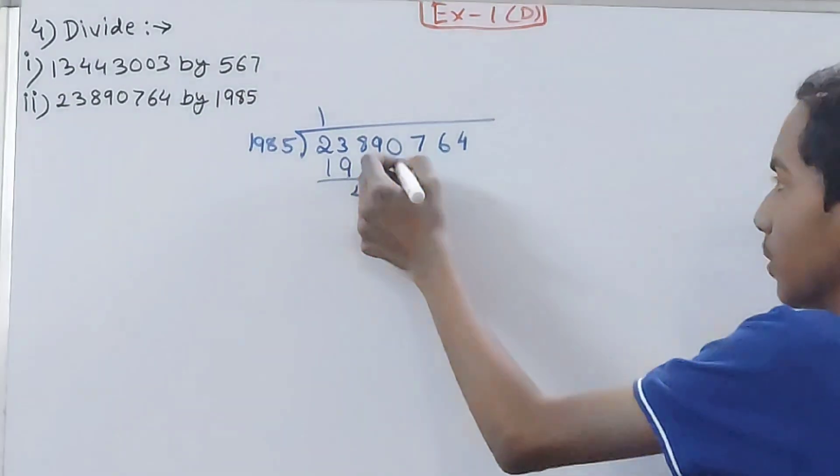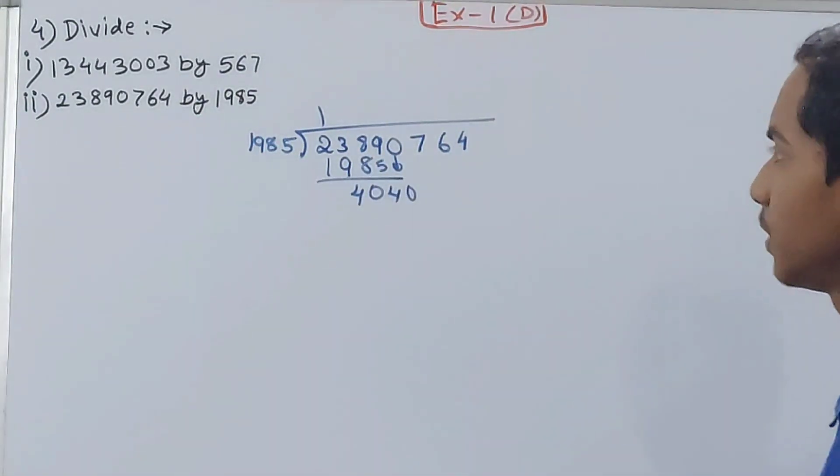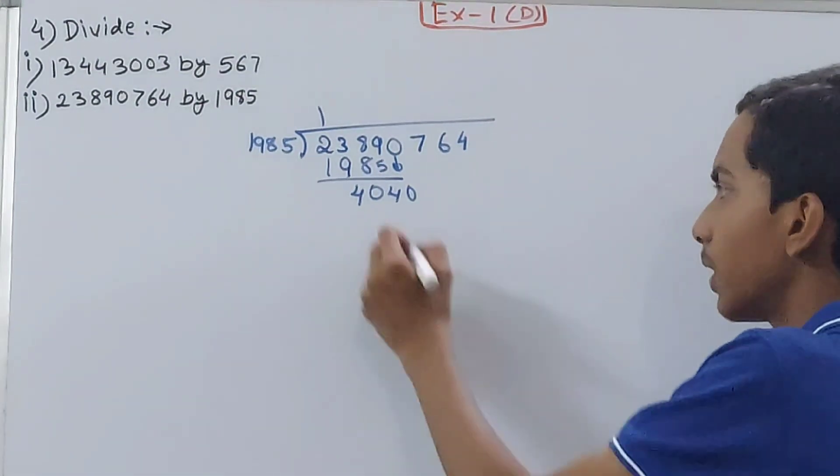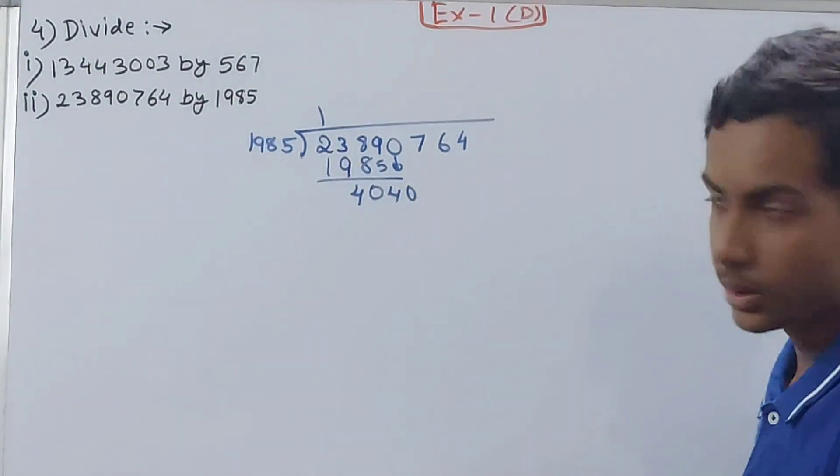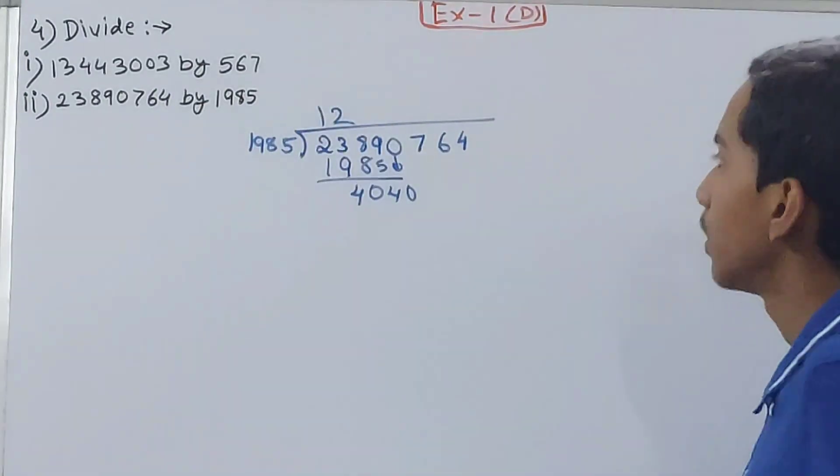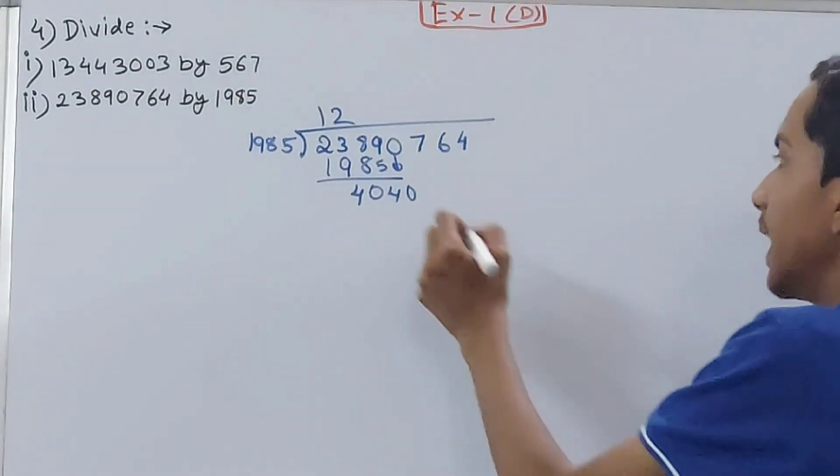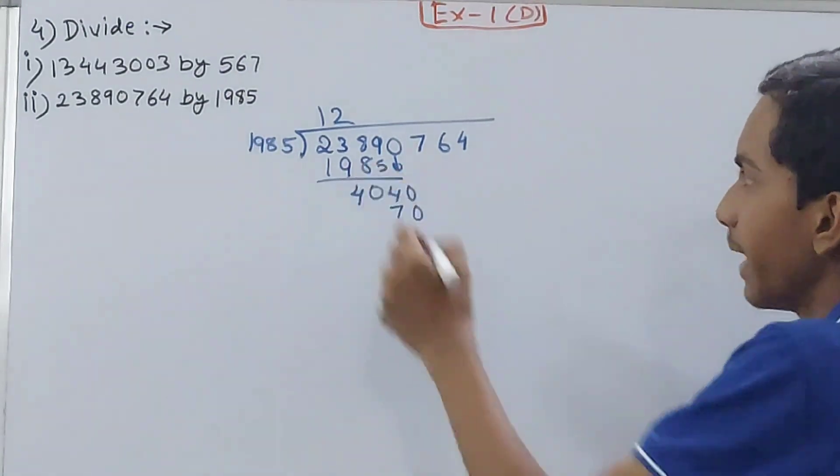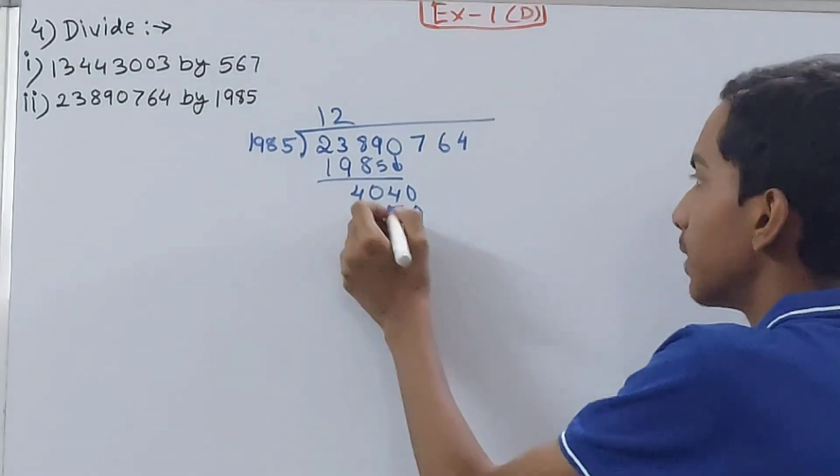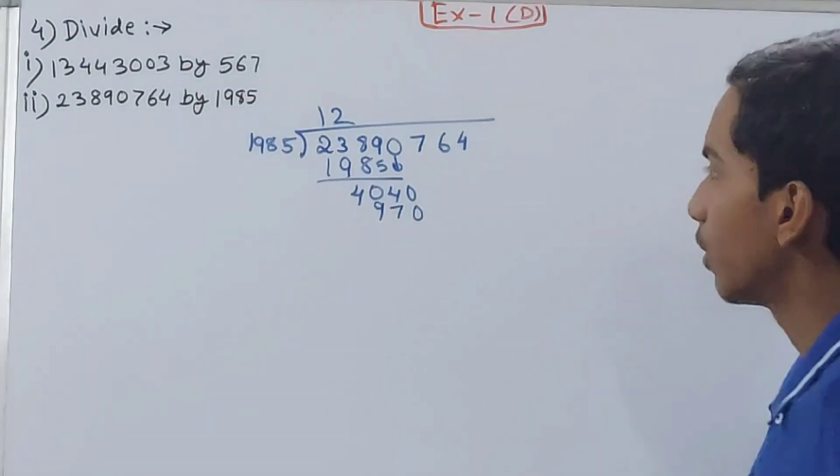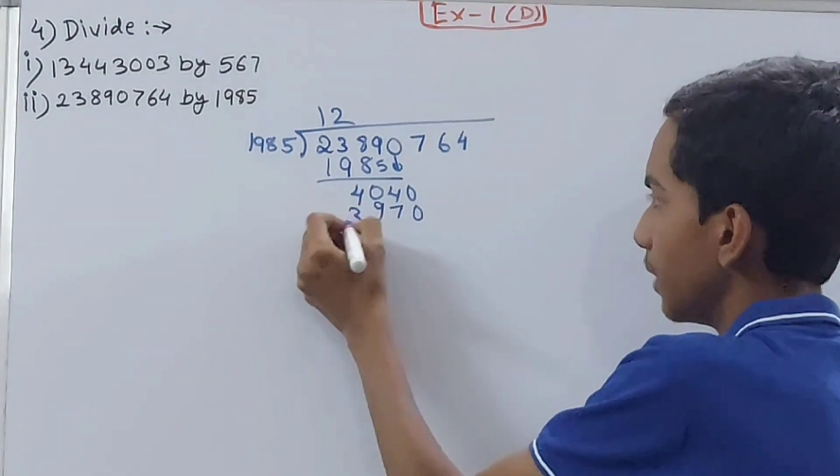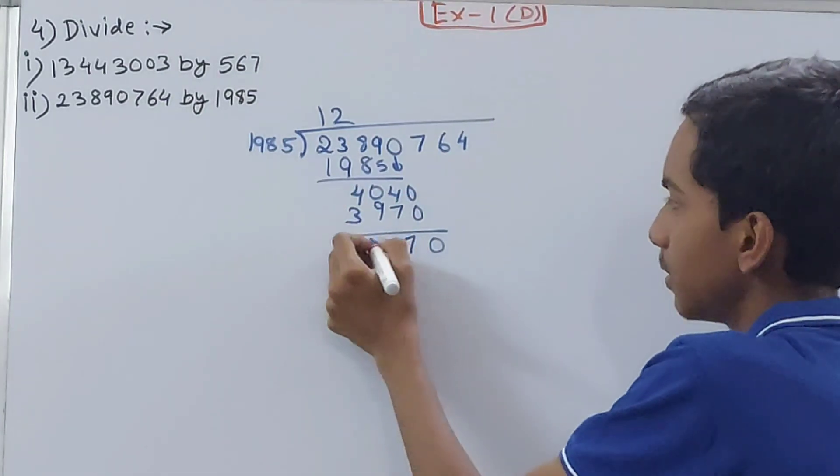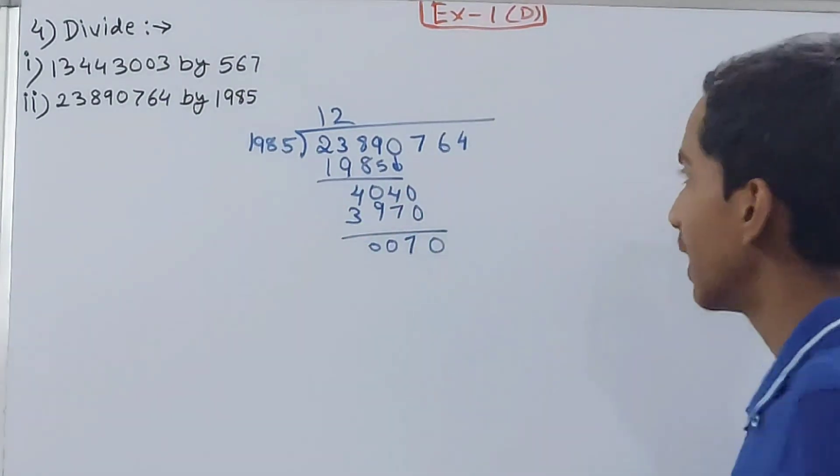Then bring down this 0. 4040. Now 1985 and 4040, so 40 and 19, again 2 times. 2 times 5 is 10, 1 carried over, 8 times 2 is 16 and 1 is 17, 1 carried over, 9 times 2 is 18 and 1 is 19, and 1 carried over. So here we'll have 3, 0, 4 minus 7 is 7, 9 minus 9 is 0.